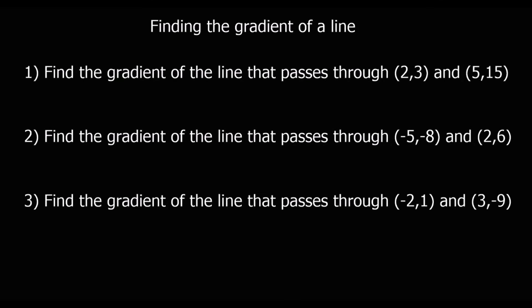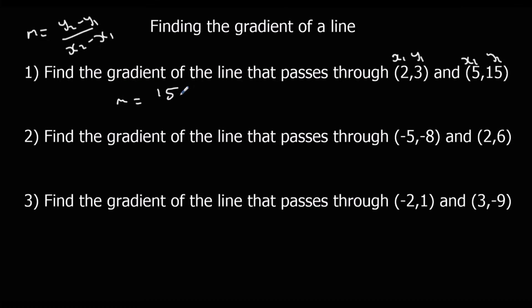Okay, here's some coordinates. Let's try and work out the gradients. Pause the video and give it a go. So we're going to use the same formula: y2 minus y1 over x2 minus x1, change in y over change in x. Labelling x1, y1, x2, y2: the gradient is y2 (which is 15) minus y1 (which is 3), over 5 minus 2 — that's 12 over 3, so a gradient of 4.